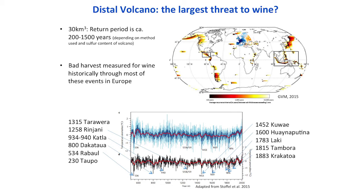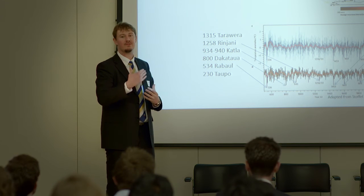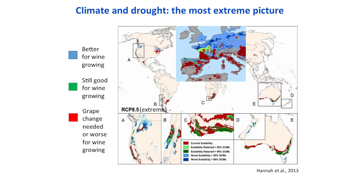Distal volcano is another disaster type which can be correlated to wine loss. After a big volcanic eruption of over about VEI 6.5, we see a huge downturn in wine output, and this has been studied from about 1300 onwards. Climate change is also one key problem, although it might also be helpful — for Germany, we will have a lot more wine growing regions in the future. However, other wine regions shown in red will have to either change their grape type from cool to a warmer variety, or they will become worse for wine growing.